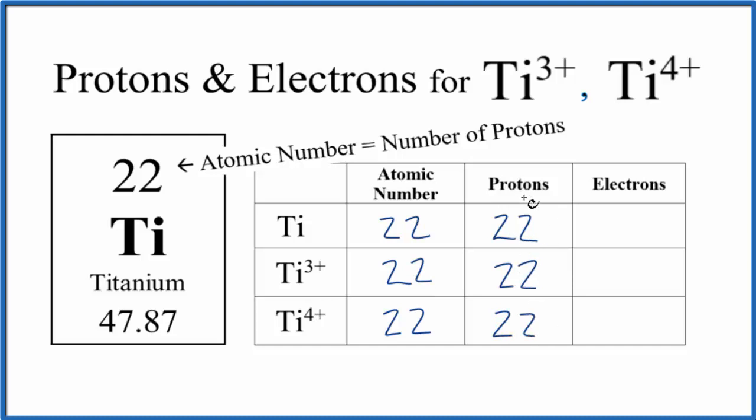The only thing that's different when we're talking about neutral atoms and ions is the number of electrons. For neutral titanium, and we know this is neutral because there's no negative or positive after it, the number of protons equals the number of electrons. So 22 electrons for neutral titanium.